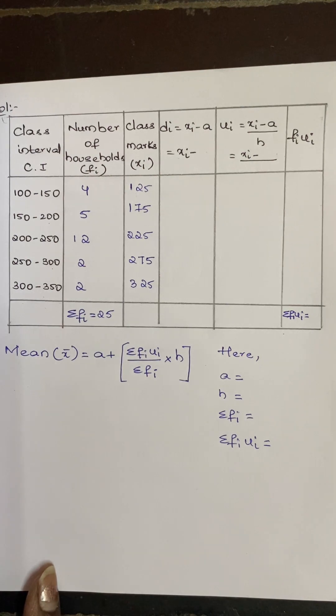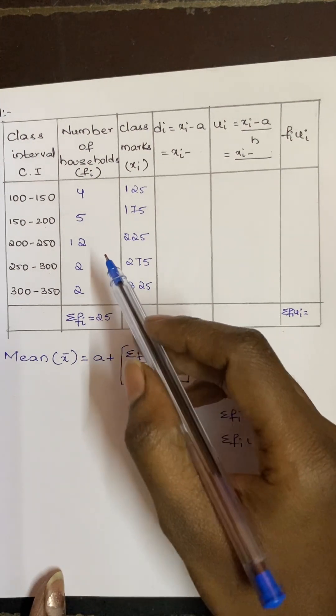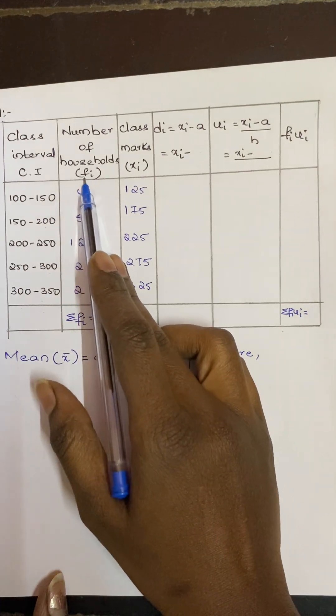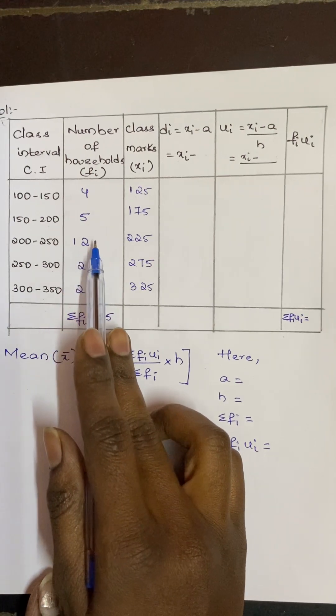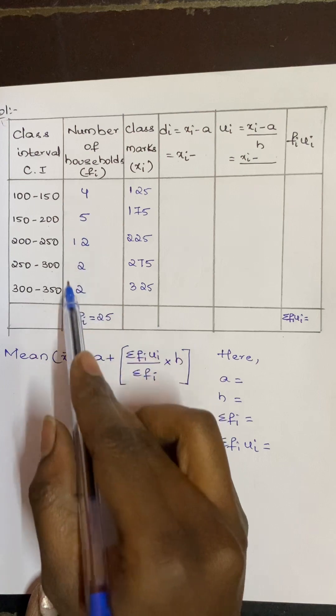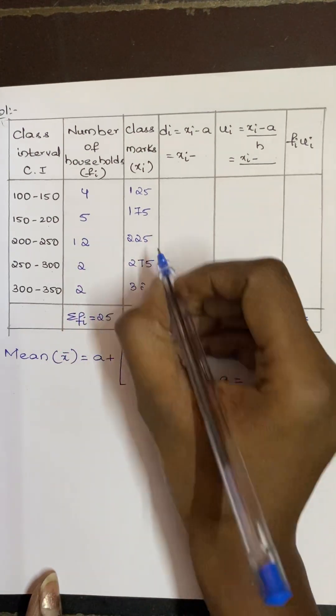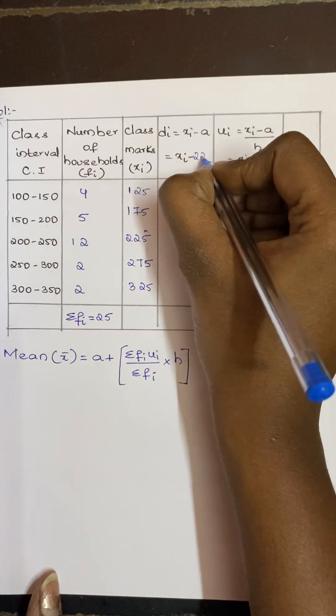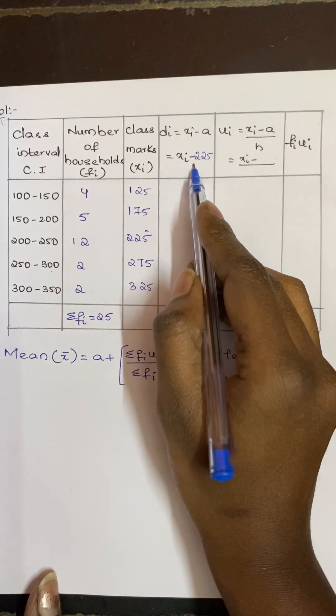In the earlier class, when we were finding the a value by using assumed mean method, we first see which is the largest value in fi. So adjacent to that, whatever is there, that becomes a. Now here what is the largest value? 12. Adjacent to that what we have? 225. So 225 becomes a.